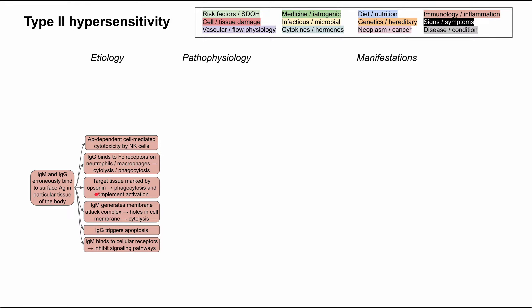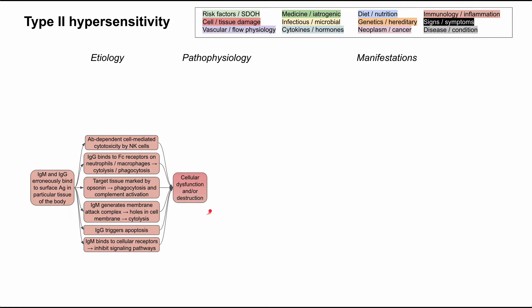IgM in particular generates the membrane attack complex, another complement pathway that pokes holes in the cell membrane of the target, causing cytolysis. IgG specifically triggers apoptosis, or programmed cell death. IgM can also bind to cellular receptors that inhibit the downstream signaling pathways for those receptors. These are all inflammatory things that either destroy or inhibit the normal functioning of the cell — causing cellular dysfunction and/or destruction.